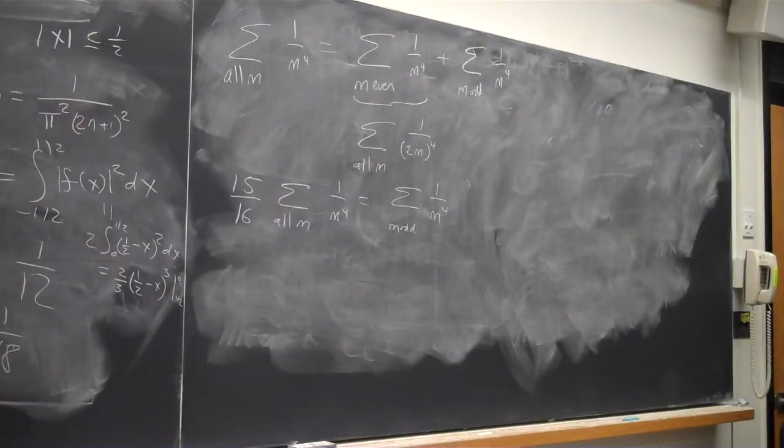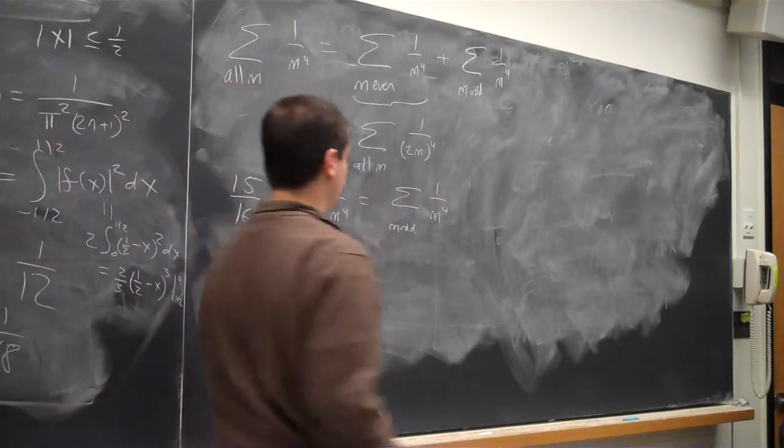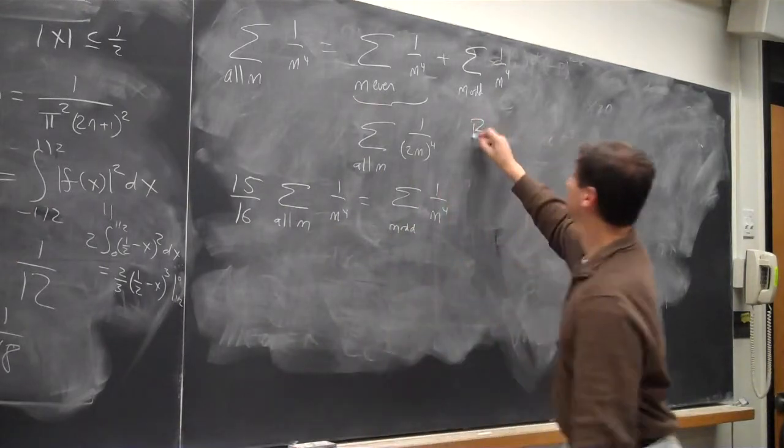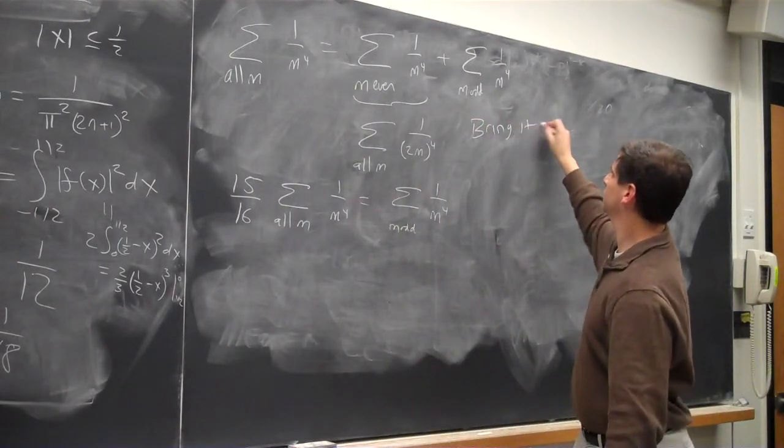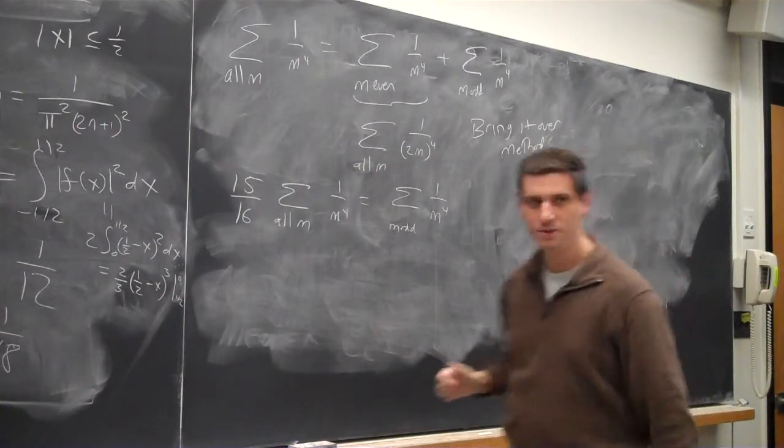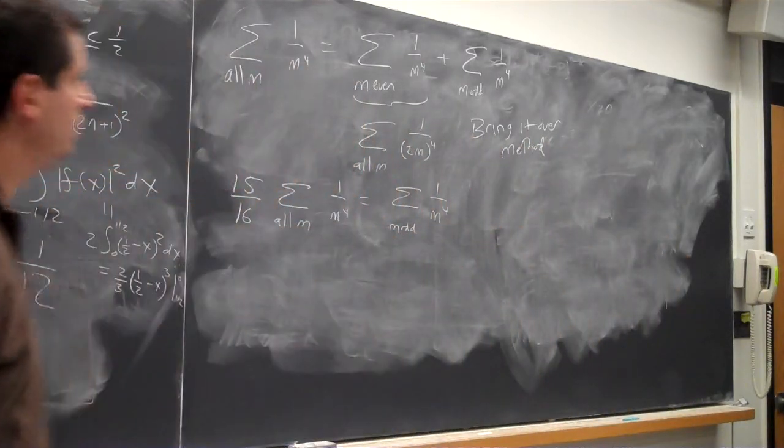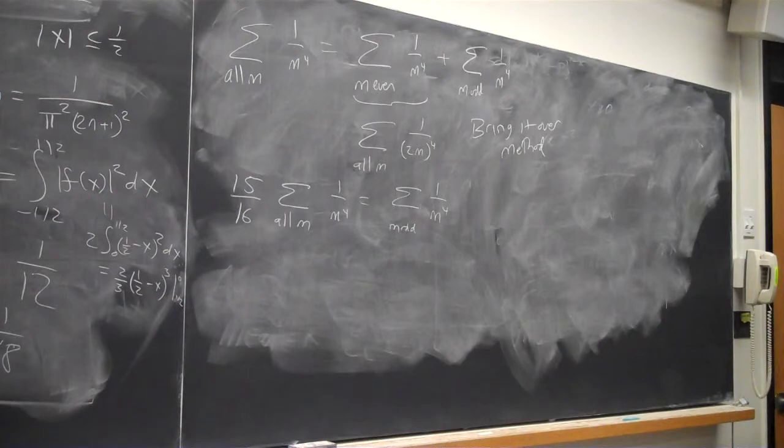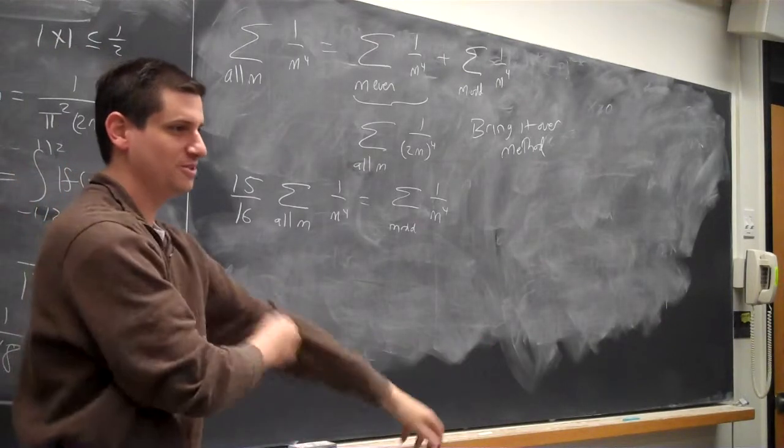If you have the same expression on both sides, you can bring it over. So this is the bring-it-over method. Not to be confused with the bring-it-on method. So the bring-it-over method, we bring it over to the other side. What's the bring-it-on method? That's when we get to some really hard heretical problems.